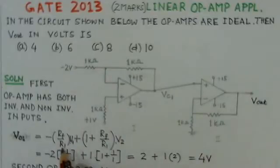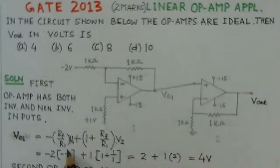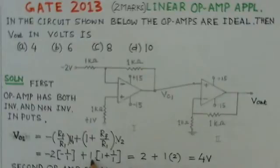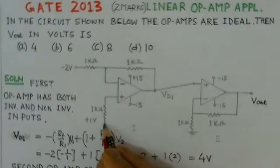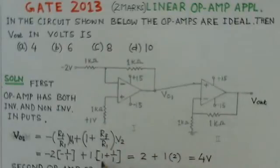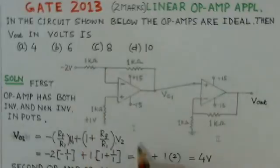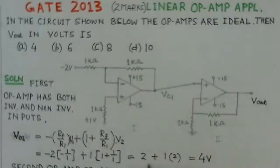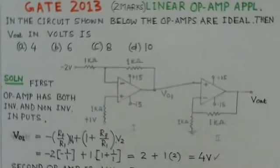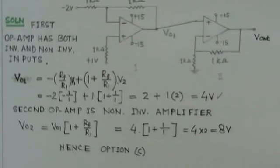Minus Rf by R1 is also 1 kilo ohm, so 1 by 1 plus 1. The input applied to the non-inverting input is 1, and this is again 1 plus 1 by 1, so this gives us the value of 4 volts. This 4 volts is the output